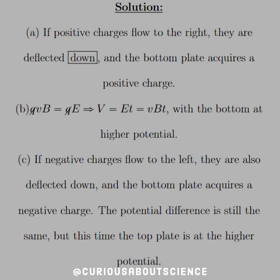For Part B: when the electric and magnetic forces equate, we cancel out Q from the force equation, and we're left with VB equal to E. But we want the potential difference voltage, so V equals E times T, which equals VBT, with the bottom at higher potential. That T refers to the dimension, not time, by the way.